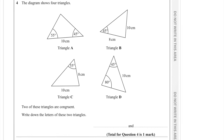Question 4. The diagram shows 4 triangles. Two of these triangles are congruent — write down their letters. Congruent means all angles and all sides are identical. We work out the missing angle using the fact that angles in a triangle add up to 180 degrees: 180 minus the sum of the other two angles equals 80 degrees. The last triangle has the same angles as the first, and the side opposite the 80 degrees is 10 cm for both. So the answer is A and D.